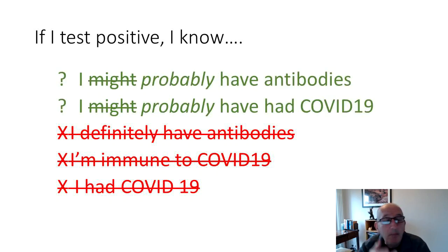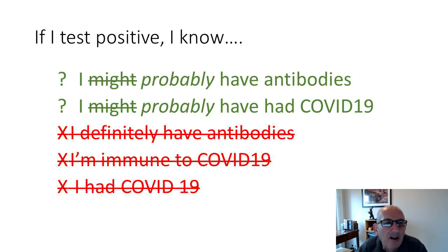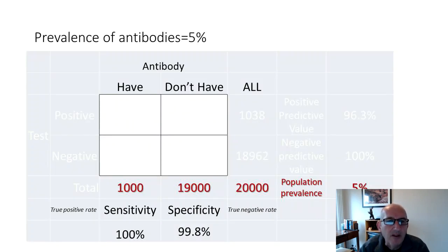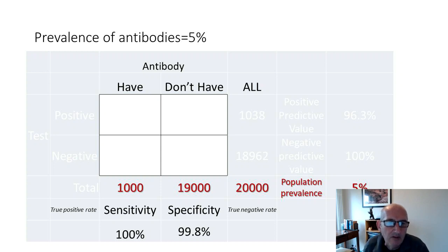You might say I'm splitting hairs, because with 100% sensitivity and 99.8% specificity you probably have antibodies and probably had COVID-19. You'd think that was certainly the case because the test is so very accurate. However, that's not always the case. The hypothetical situation I described was based upon a population prevalence of 5% for antibodies, and under those circumstances, in that 20,000 people, you've got 1,000 people who have antibodies and they all test positive.